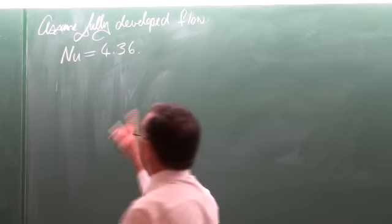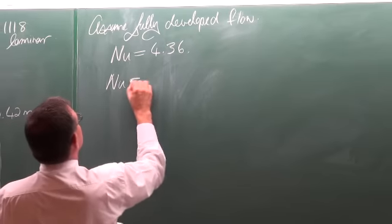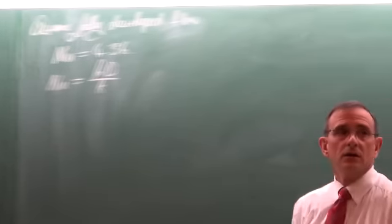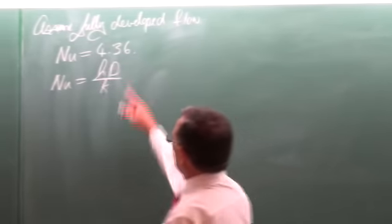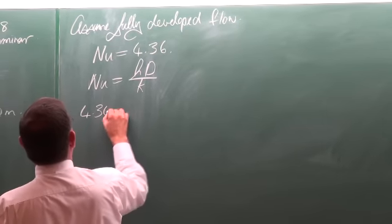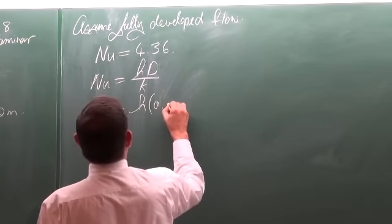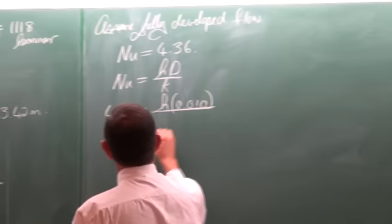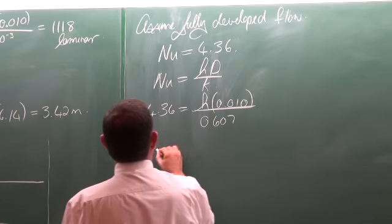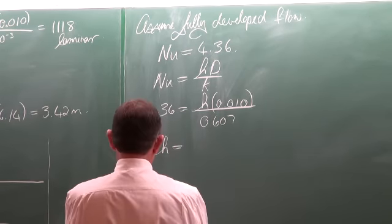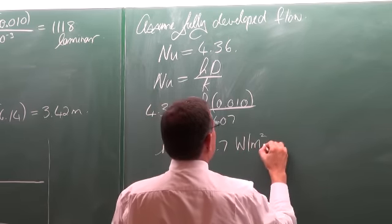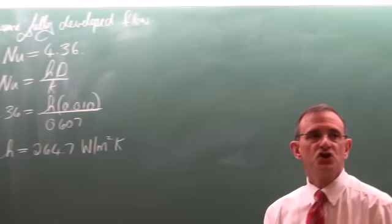The Nusselt number is 4.36. The definition of the Nusselt number is that it equals the heat transfer coefficient multiplied by the diameter divided by the thermal conductivity. With Nu = 4.36, diameter = 10 mm, and k = 0.607, we can solve for the heat transfer coefficient: h = 264.7 W/(m²·K).